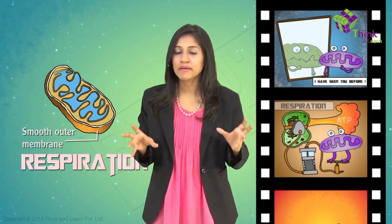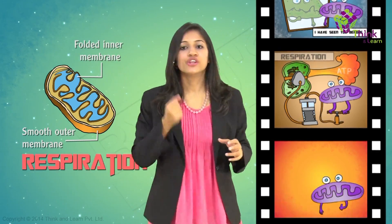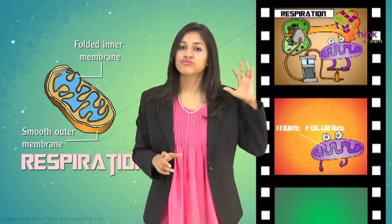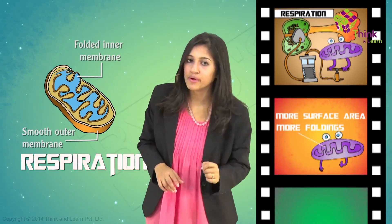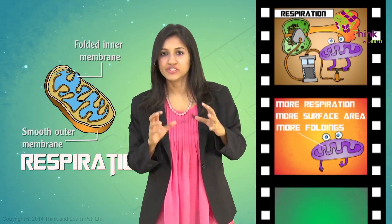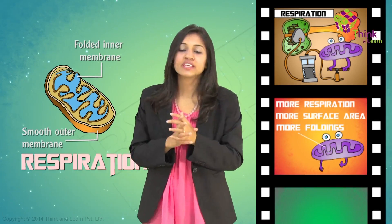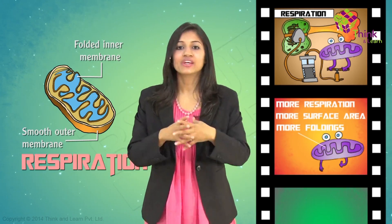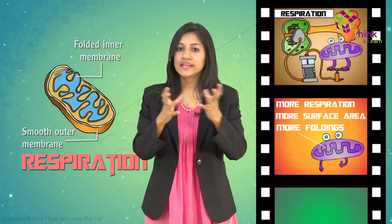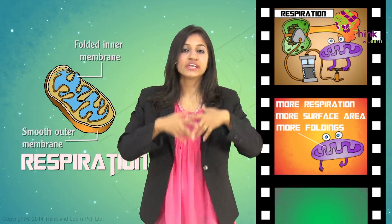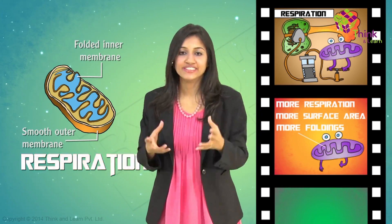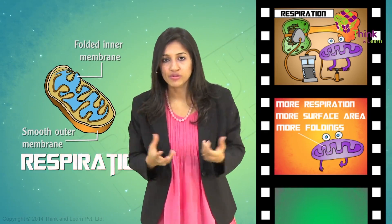It has a smooth outer membrane and an inner membrane that's folded on itself to give rise to something called cristae. Whenever you see foldings, always remember that it is to increase the surface area. By increasing the surface area, we can make as much energy as possible and generate as many ATP molecules as possible, so more and more energy is available for us.